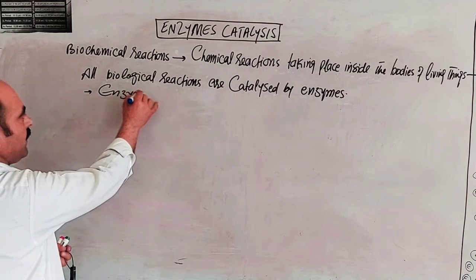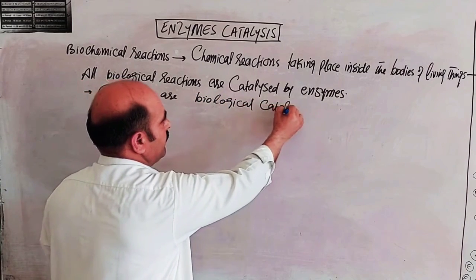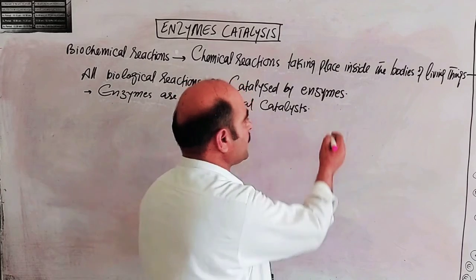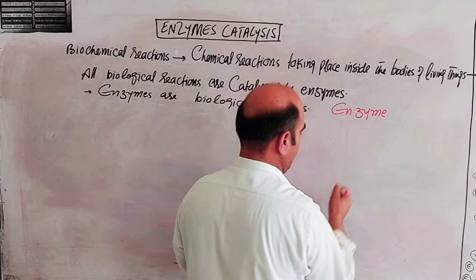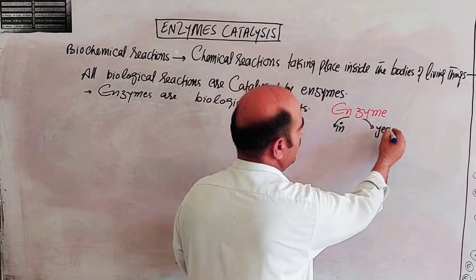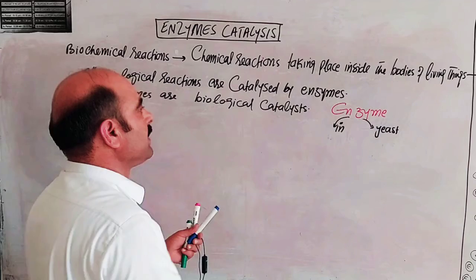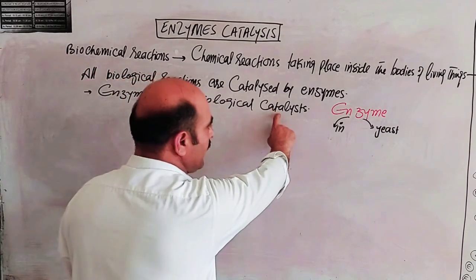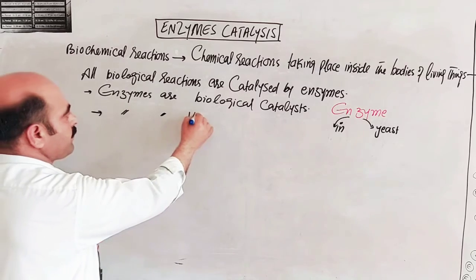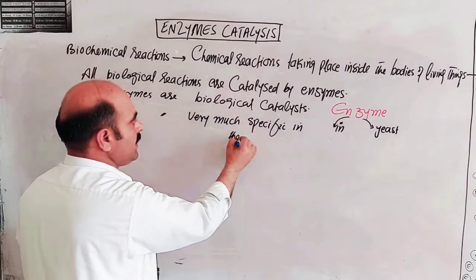Enzymes are biological catalysts. The word enzyme comes from 'en' meaning 'in' and 'zyme' meaning 'yeast.' So enzyme literally means 'in yeast.' Enzymes are unicellular plant-related biological catalysts that speed up biochemical reactions. They are very much specific in their functions — enzymes are very much specific in their functions.